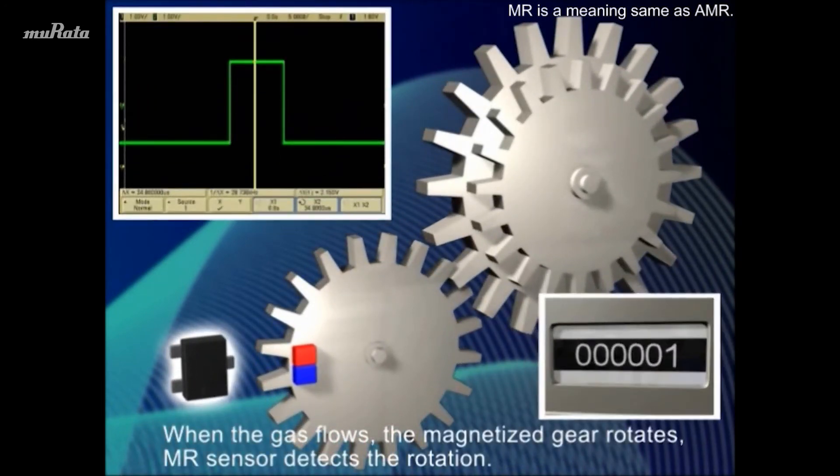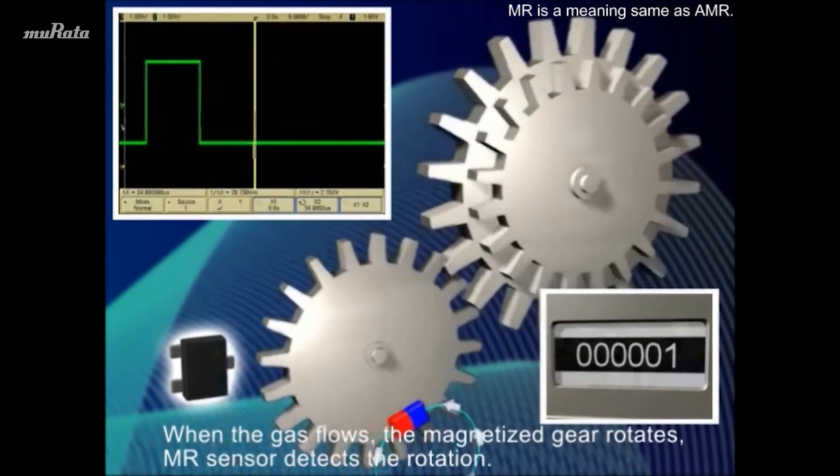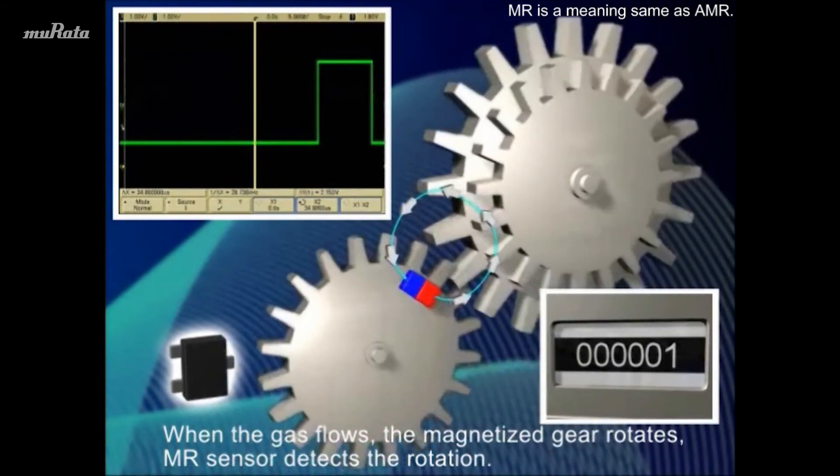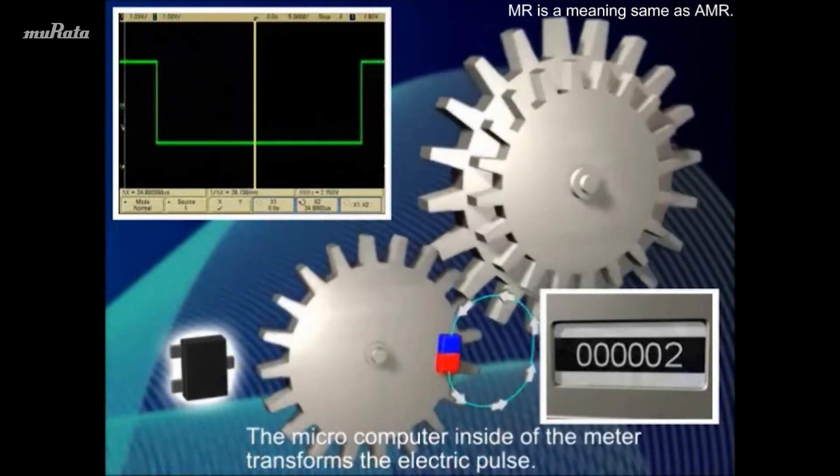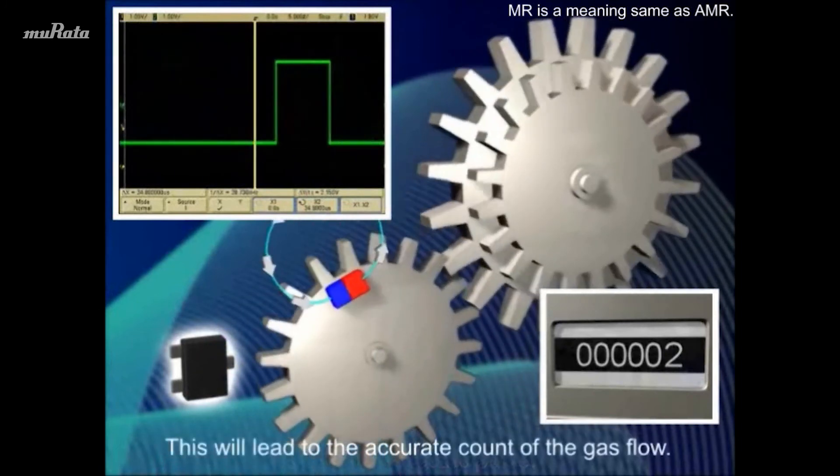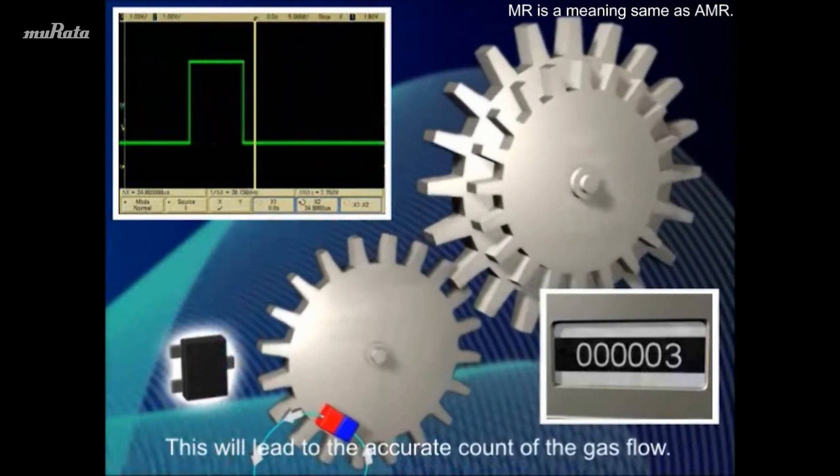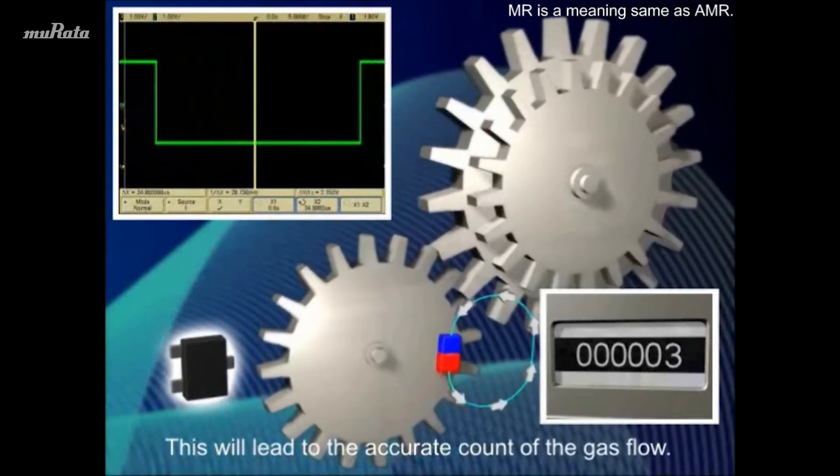When the gas flows, the magnetized gear rotates. MR Sensor detects the rotation. The microcomputer inside of the meter transforms the electric pulse. This will lead to the accurate count of the gas flow.